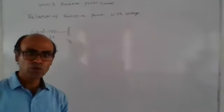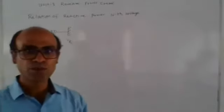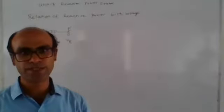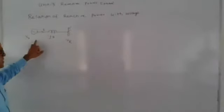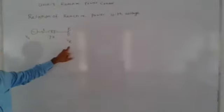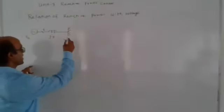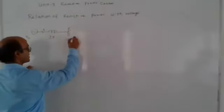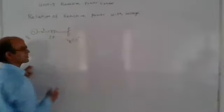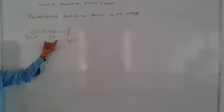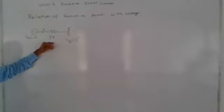Before we go to how to control reactive power, we will establish the relation between reactive power and real power. This is a generator supplying power to some consumers. The receiving end voltage is VR at angle zero — I am assuming this as a reference voltage — and VS is at some angle delta. There is a reactance X of the transmission line.